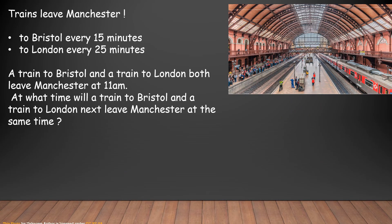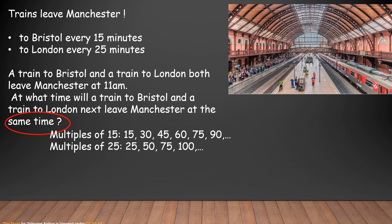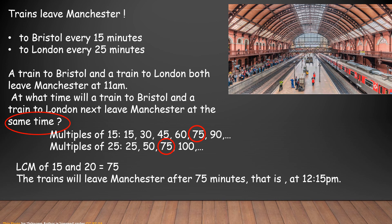Let's see one more example. Trains leave Manchester to Bristol every 15 minutes and to London every 25 minutes. A train to Bristol and a train to London both leave Manchester at 11 a.m. At what time will a train to Bristol and a train to London next leave Manchester at the same time? The key words are 'at the same time,' so we write the multiples of 15 and 25 and find the least common multiple. We can see that 75 is the LCM of 15 and 25, meaning the trains will next leave Manchester together after 75 minutes.